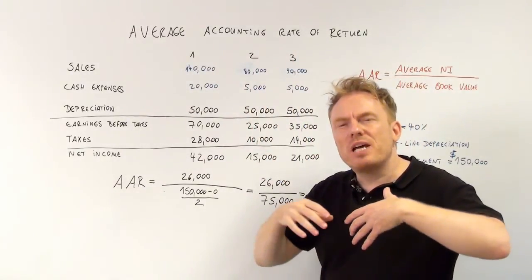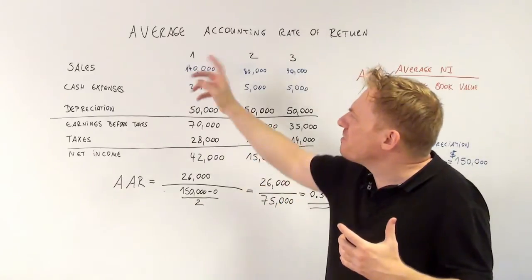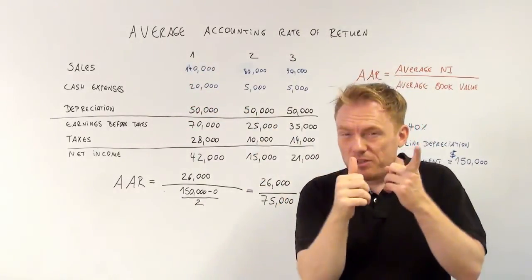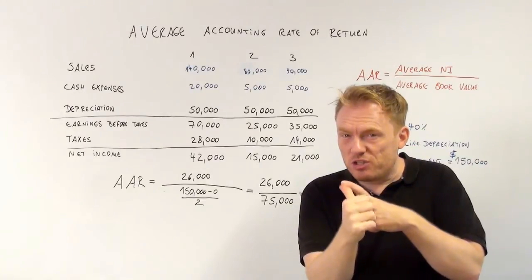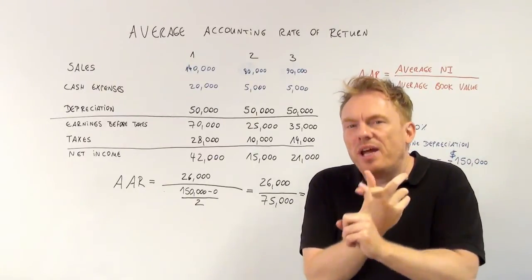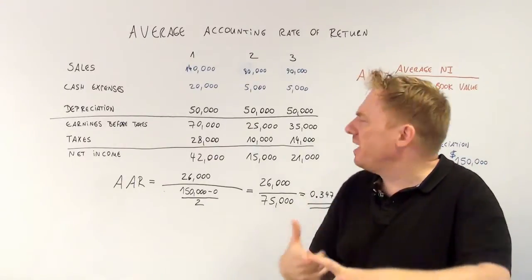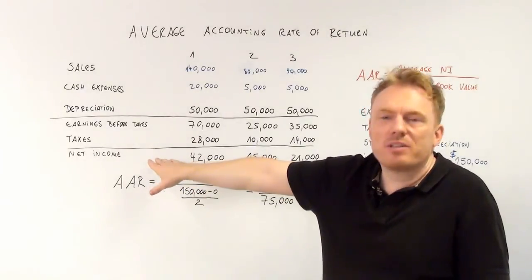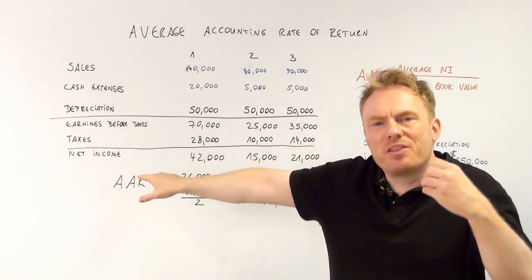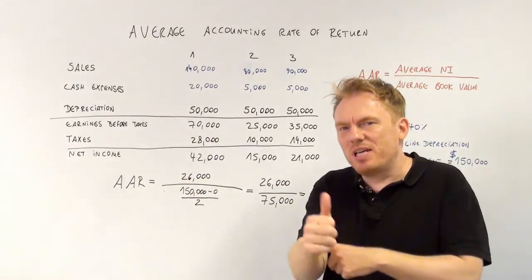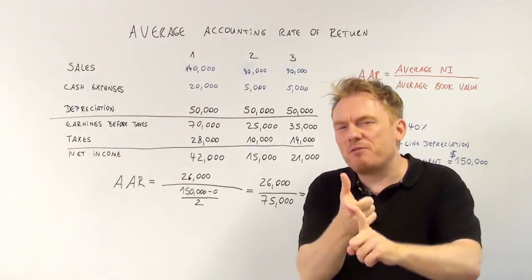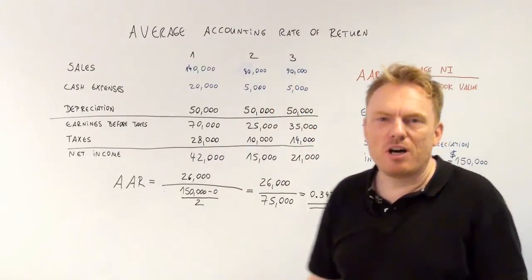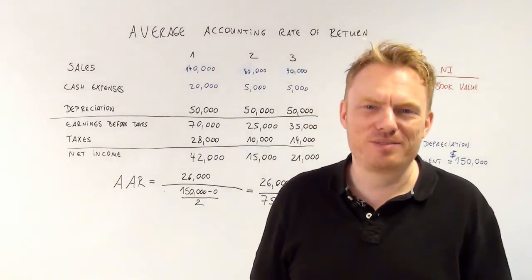To summarize, you need a large example of additional sales and cash expenses. You need to calculate depreciation and know the tax rate to calculate taxes, and thus net income, giving you average net income and average book value, which lets you calculate the average accounting rate of return. Thank you for watching.